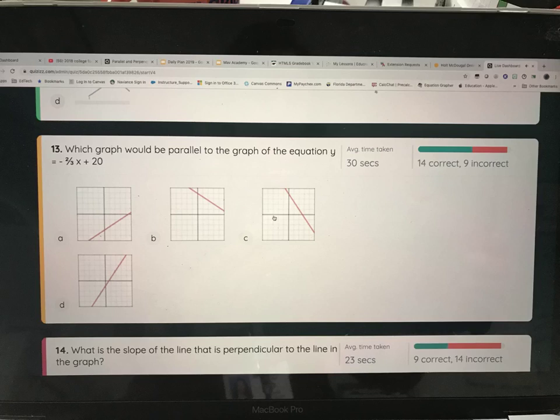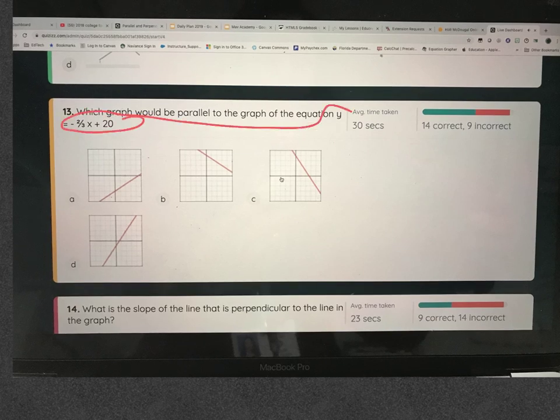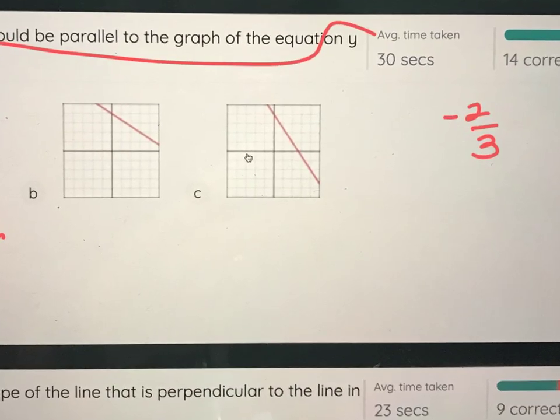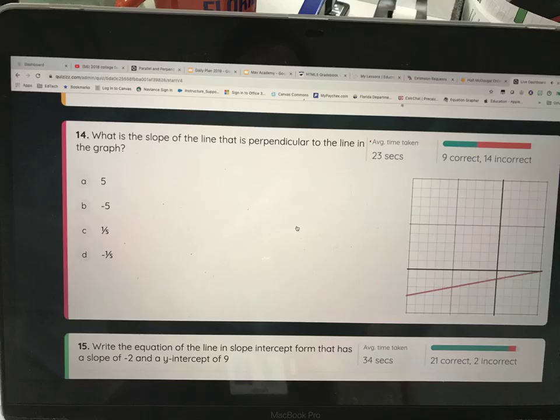Which graph would be parallel to the graph of the equation Y equals negative 2/3 X plus 20? So the slope of this line is what? Negative 2/3. The first thing you can do is rule out anything that has positive slope, which is this one and this one, and then just look at these two and see which one has a rise of negative 2 and a run of 1, 2, 3, and it's that one. How do you know exactly that positive means? Positive means it's increasing as you move left to right. Decreasing as you move from left to right is negative. That's why you say as you move from left to right.